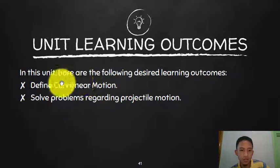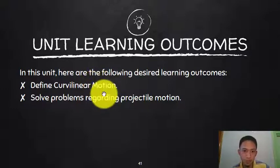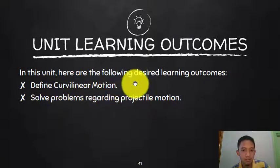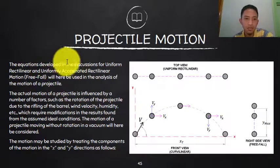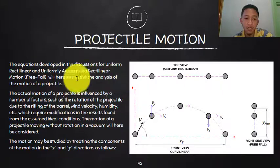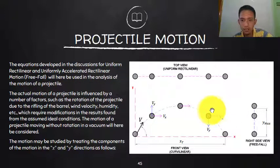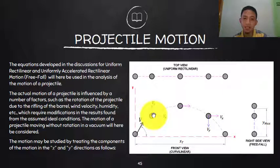Now for the second learning outcome: solving projectile motion problems. The equations for uniform rectilinear and uniformly accelerated rectilinear motion will be used in the analysis of projectile motion. A projectile follows a curved path, falling under curvilinear motion. As discussed, we break it down into horizontal and vertical components and apply rectilinear equations to each.